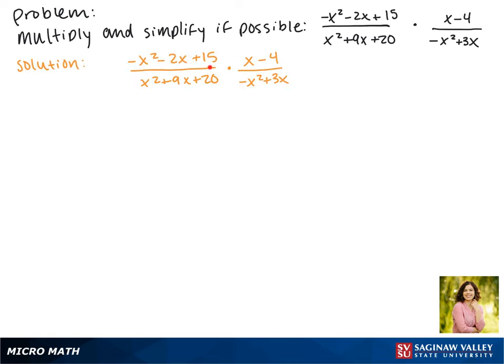Our first step is to look at this numerator and this denominator here and we want to factor out that negative that's in front. So this becomes the negative of x squared plus 2x minus 15. The denominator will stay the same, and then over here we can factor out a negative x and that becomes x minus 3.